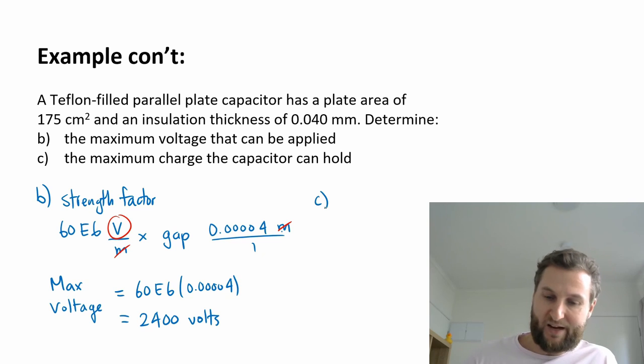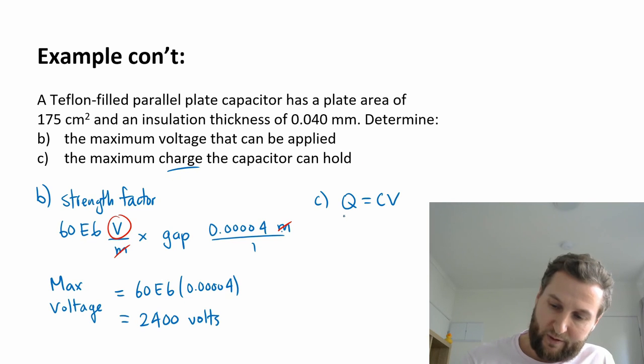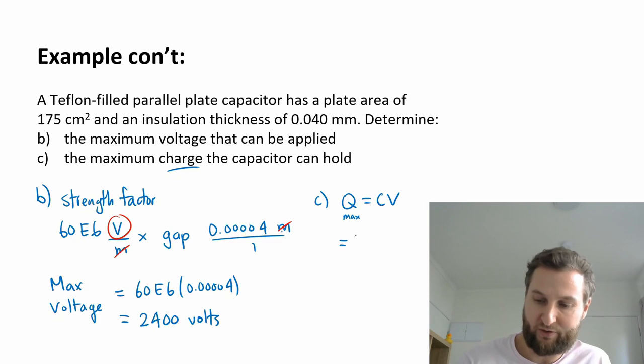Now if we apply that maximum, we can find the maximum charge. We're looking for maximum charge, which is Q. That is going to be equal to capacitance times voltage. Maybe I'll put a little subscript max here. My capacitance going back to part A, my capacitance is 8.13.